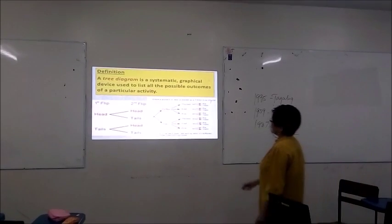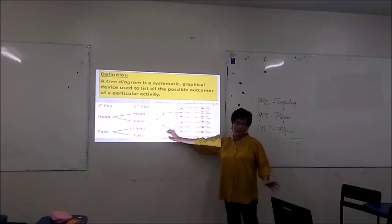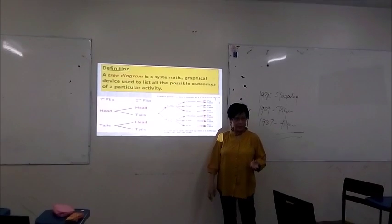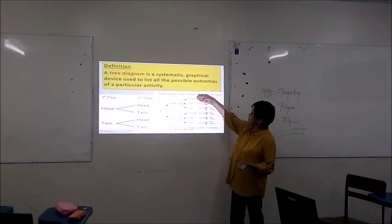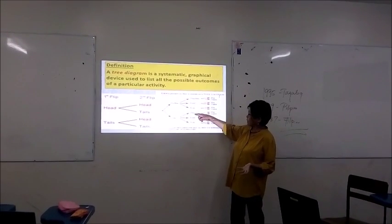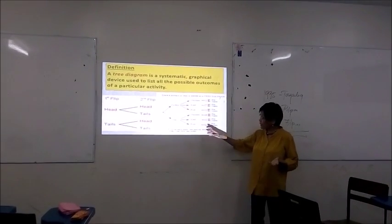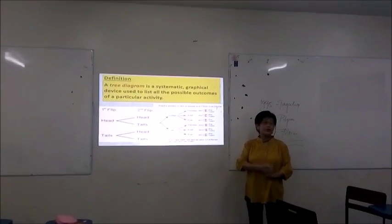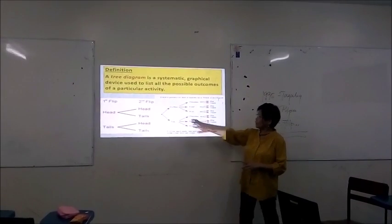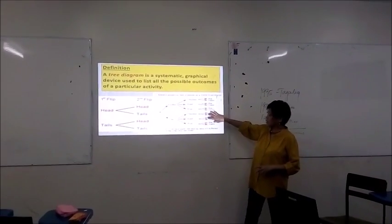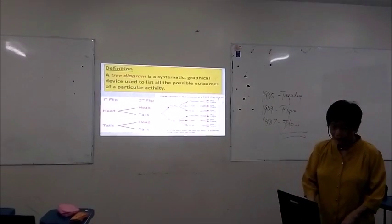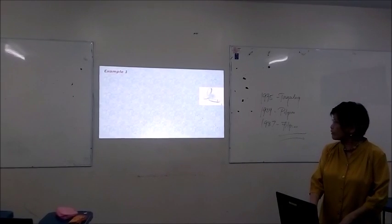Here is another example using a tree diagram — when you are choosing a menu in a certain restaurant. In that restaurant, there are two choices of beverage: coffee or tea. And then there are three mains you can choose from: either a chicken, a beef, or a fish entrée. And if you choose dessert, you have two choices: either a pie or a cake. So we can use the tree diagram to count all the possible outcomes in this activity.